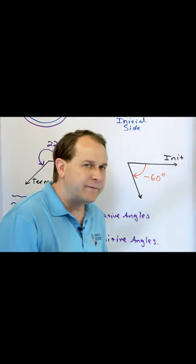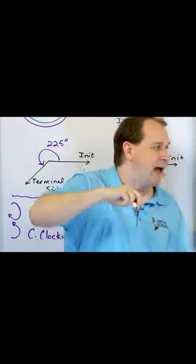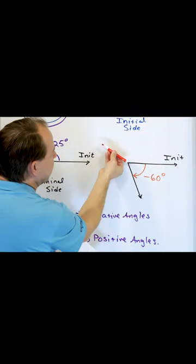So when you see negative angles, it just means angles that are measured below the x-axis. And these angles, of course, you can measure negative angles all the way around, right?